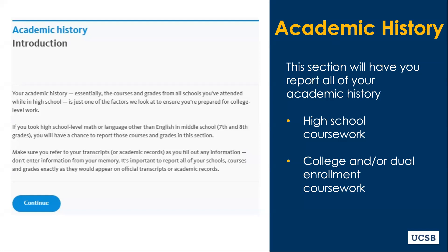The A-G courses are essentially the core courses that we require students to complete for all UC campuses. It is recommended that you obtain an unofficial copy of your transcripts before you begin working on this section, as it is very important that the courses and grades you enter correspond exactly with what appears on your transcript.